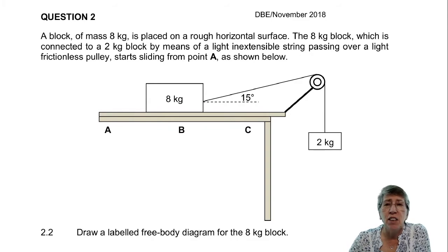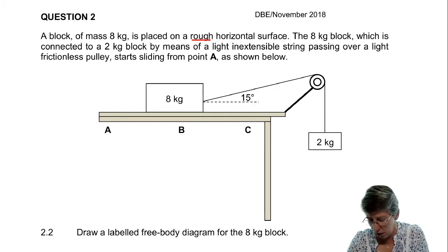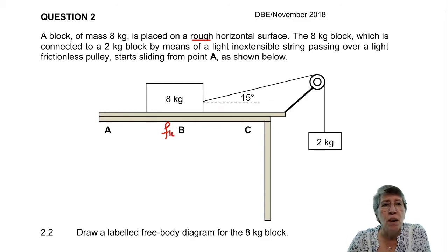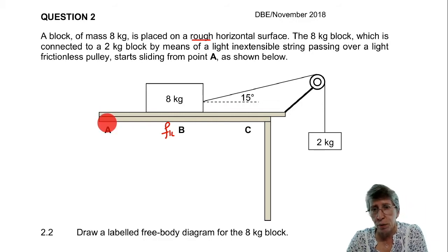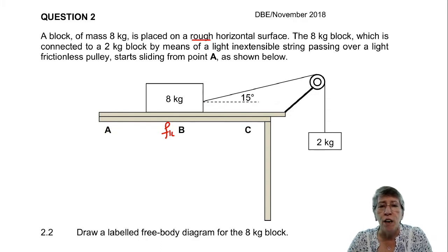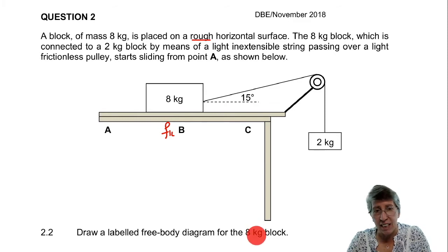In 2018, they told us that a block of mass 8 kg is placed on a rough horizontal surface — once again telling us there's going to be some frictional force. The 8 kg block is connected to a 2 kg block by means of a light inextensible string passing over a light frictionless pulley, and starts sliding from point A. Now they ask us to draw a free body diagram for the 8 kg block only.